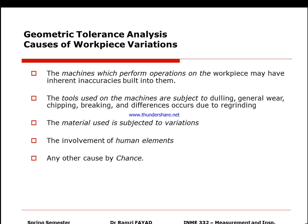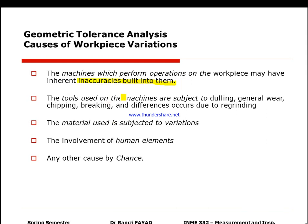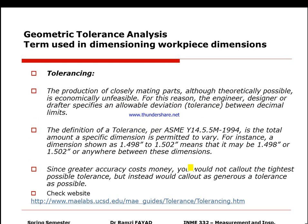The first reason is the machine which does the job — that might have a problem in it. The second reason is inaccuracy built into the machine. The machine is subjected to wear, dulling, chipping, and breaking. It may need to be recalibrated. The involvement of the human element and other causes by chance will all cause problems in the system.